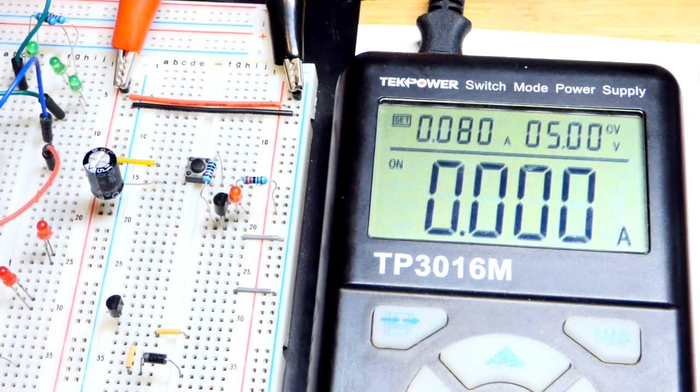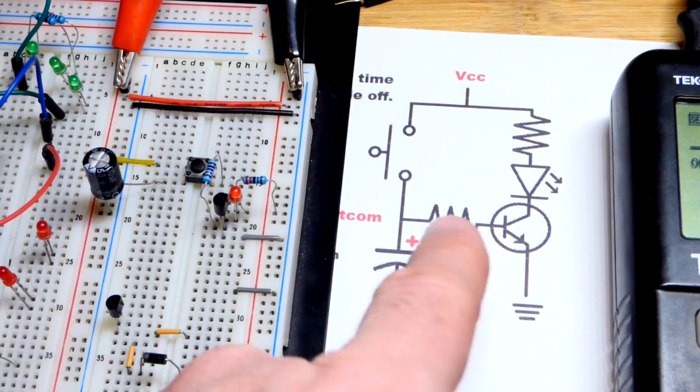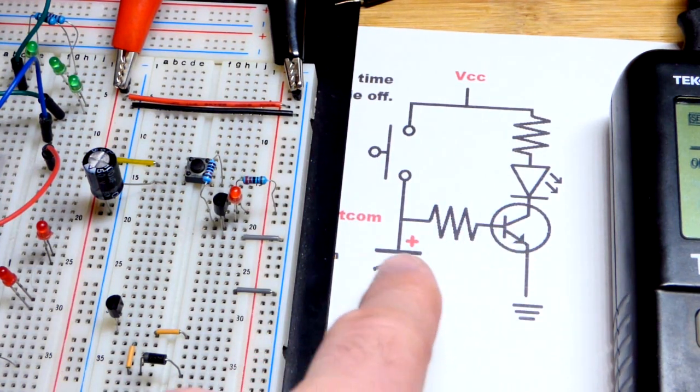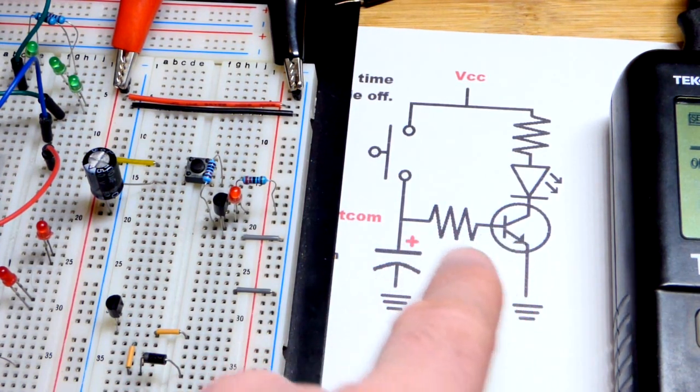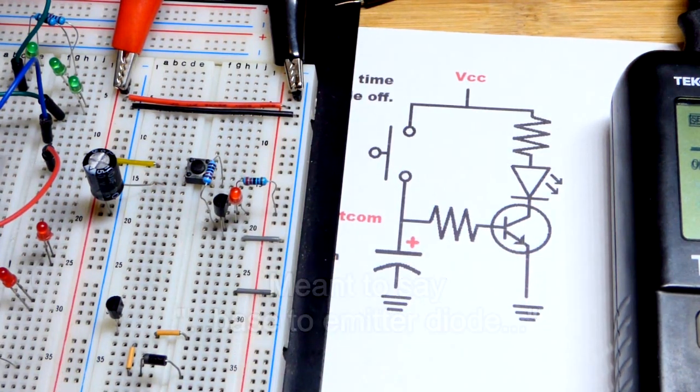The capacitor doesn't have enough voltage to power it. So it does need 0.7 volts or 0.6 volts, close to that. When you get to a lower current, the LED diode in there, base to emitter diode, blocks a little less voltage.